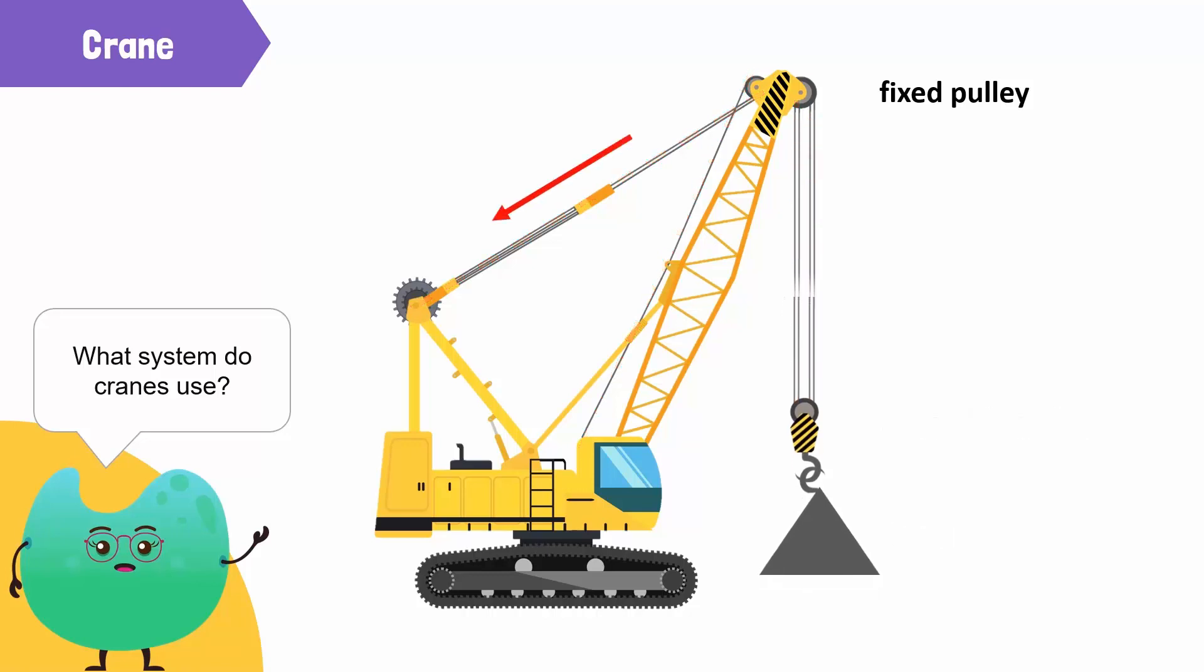A load is attached to the movable pulley and is lifted when force is applied to the other end of the rope. Is there any other system that you can identify in this crane?